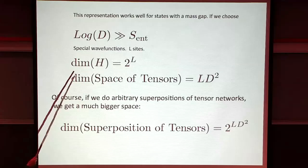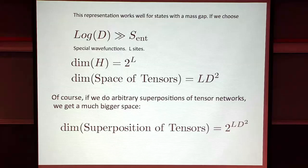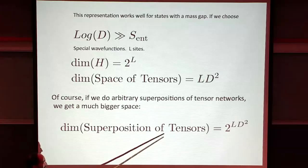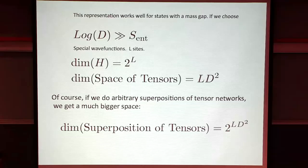We constructed a particular wave function. We could change the tensors, and as we change them, we span various wave functions. We can take linear combinations of those wave functions - superpositions of those tensor networks. That would give something of much higher dimension, bigger than the original dimension, so there is some redundancy in this description. You are representing superpositions by enlarging the amount of indices in the tensor.